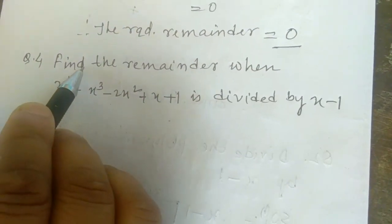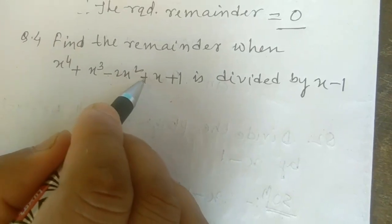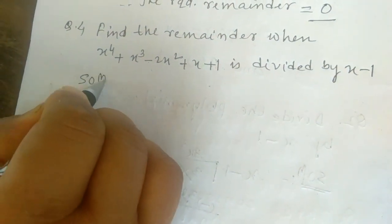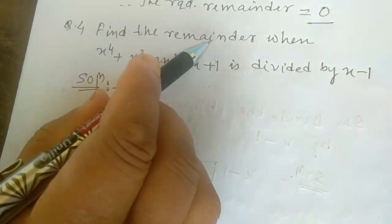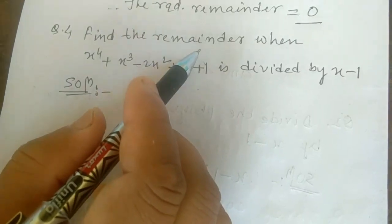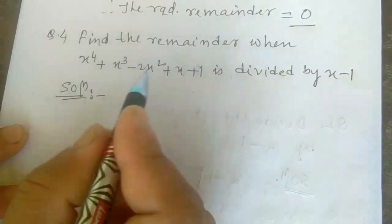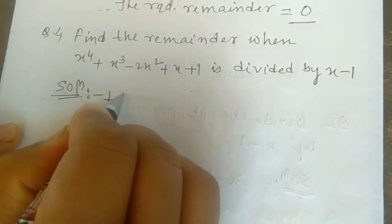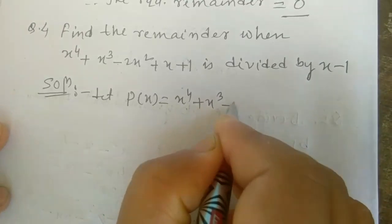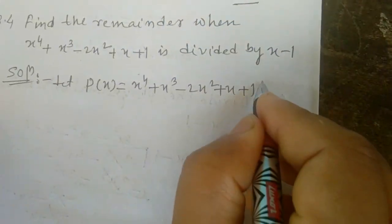Today's last question: find the remainder when x⁴ + x³ - 2x² + x + 1 is divided by x - 1. Listen very carefully: whenever it says 'find the remainder,' it is not compulsory to divide by long division method. Just apply the remainder theorem. Let p(x) = x⁴ + x³ - 2x² + x + 1.